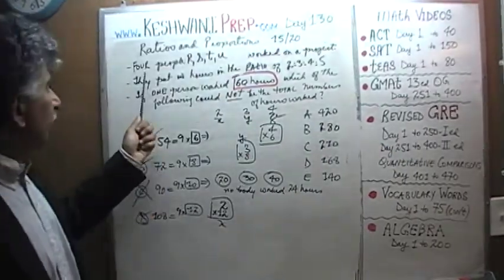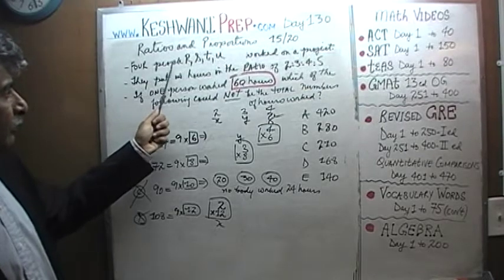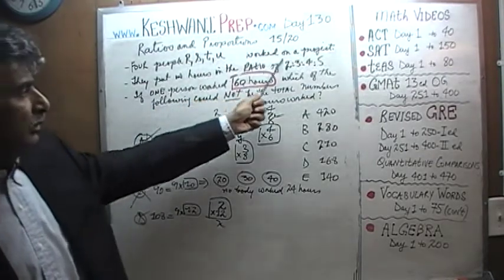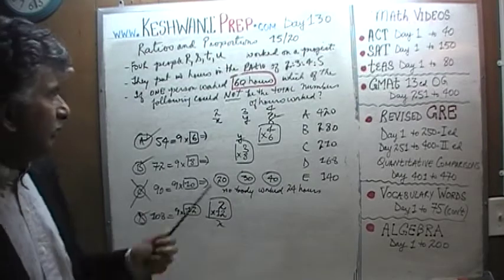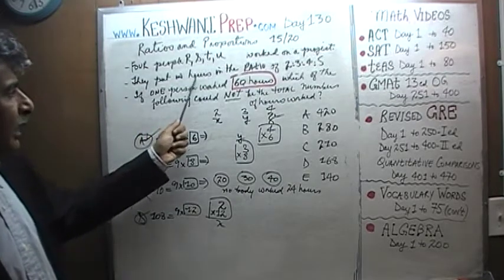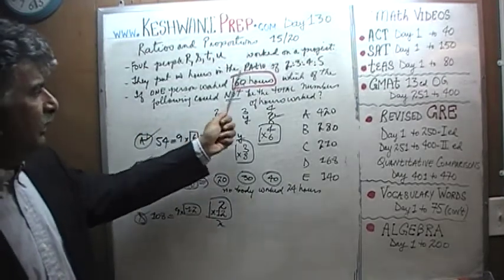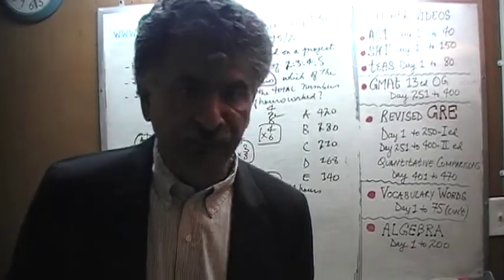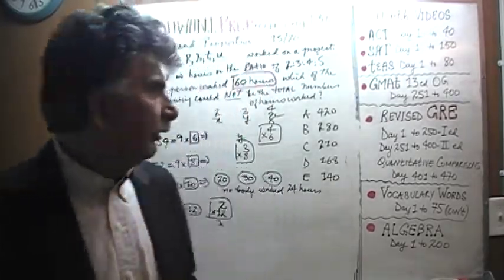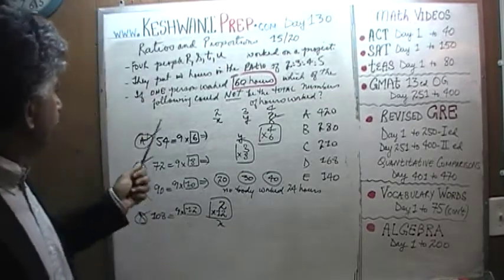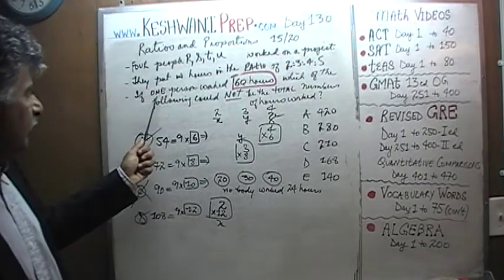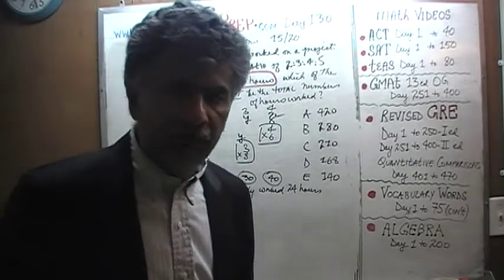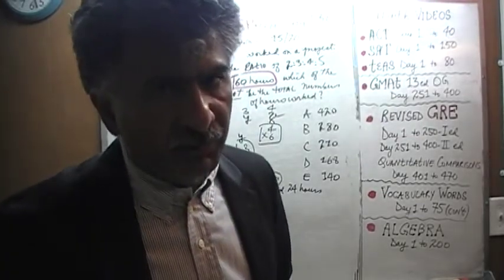It says 4 people — R, S, T, and U — work on the project. We are told that they put in hours in the ratio of 2 to 3 to 4 to 5. We are also told that 1 person put in 60 hours on this project.